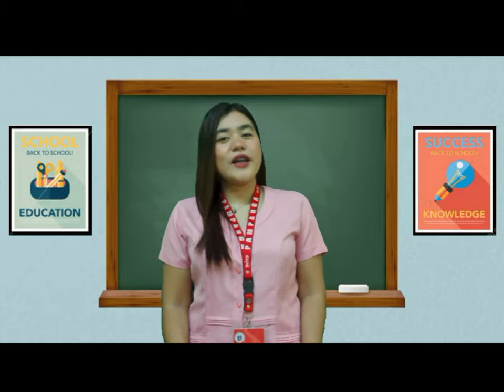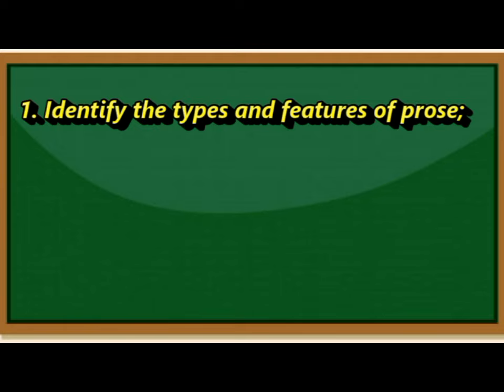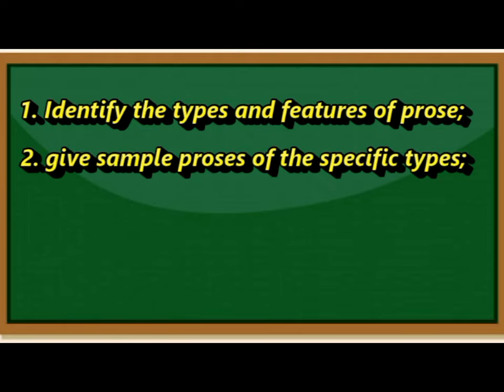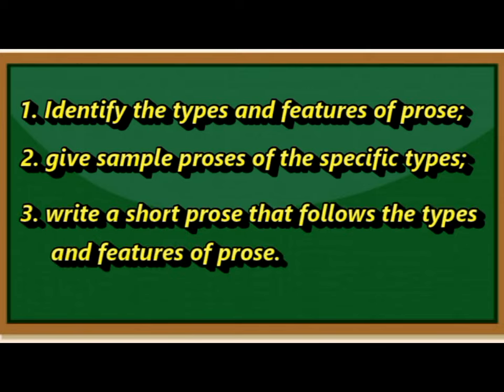At the end of this lesson, you are expected to attain the following. Number one, identify the types and features of prose. Number two, give sample examples of the specific types. Number three, write a short prose that follows the types and features of prose.